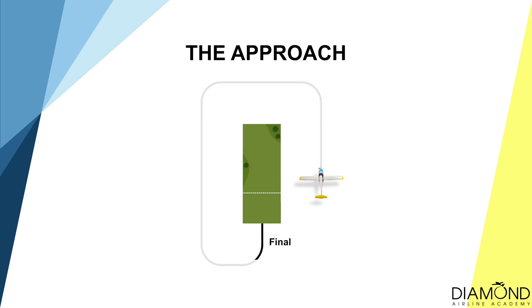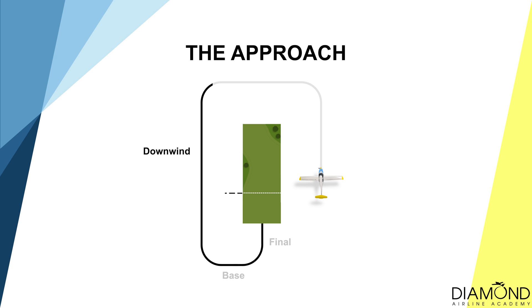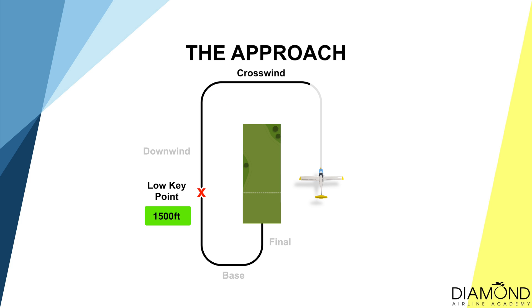Before the one third aim point, it's the final and then base. When 45 degrees to the threshold on base, it's the start of the downwind. On downwind, when abeam the one third aim point, that's the low key point — the aircraft should be at 1,500 feet above ground. Extending downwind until 45 degrees with the other end of the field is the start of crosswind. On crosswind, when abeam the one third aim point, this is the high key point — the aircraft is aiming to be here at 2,500 feet above ground. The purpose of the high key and low key points is to judge if the aircraft's altitude is within an acceptable range for the chosen field.